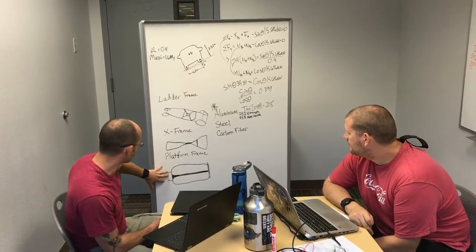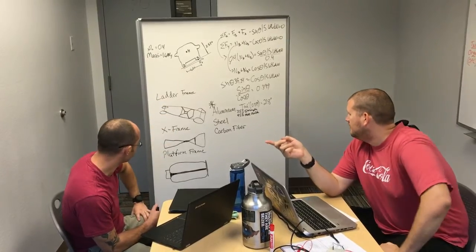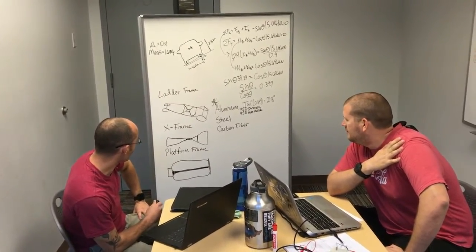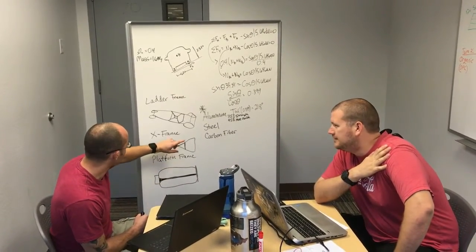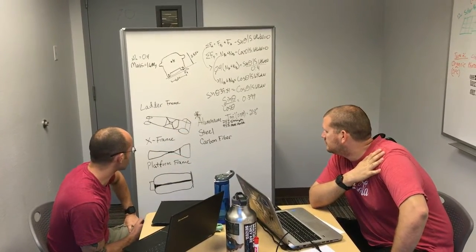So is aluminum the lightest? Because the lighter it is, the more distance we're going to get out of the batteries. Carbon fiber is lighter than aluminum, but it is more expensive.